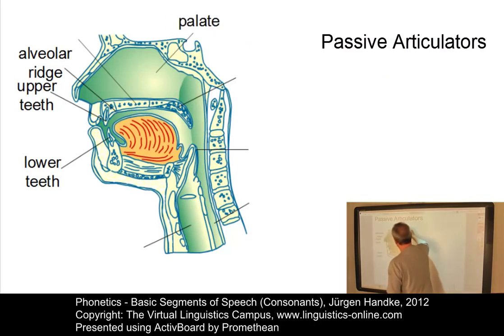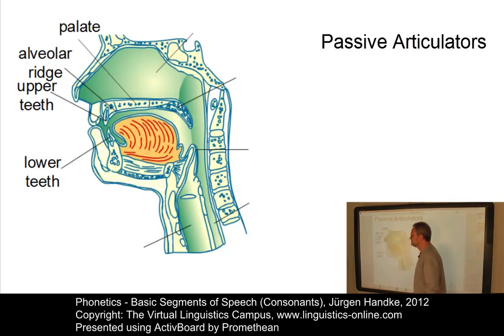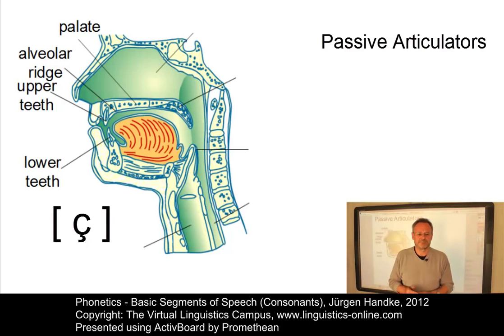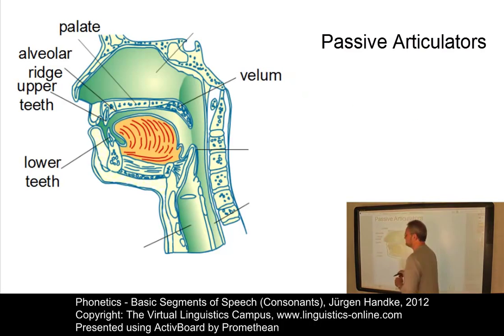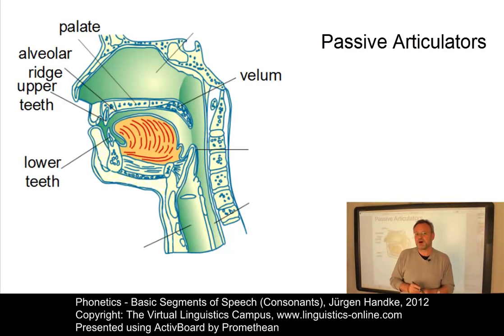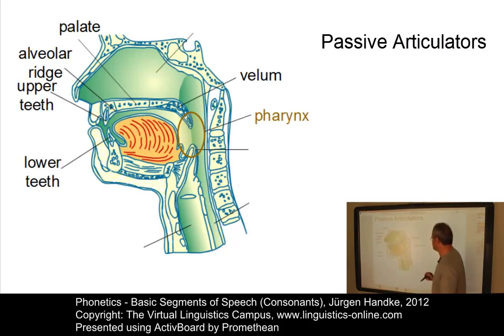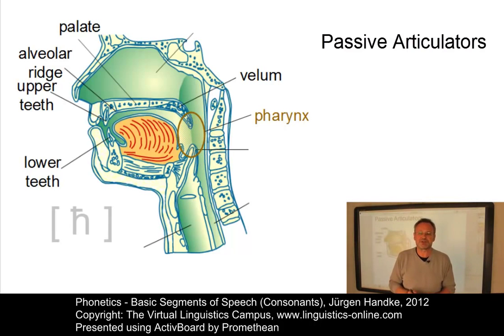The palate, or hard palate, is an area for a large number of consonants and is often referred to as the roof of the mouth. Then we have the soft palate or velum, which is a broad band of muscular tissue in the upper region of the mouth. Typical consonants there are [k] or [g]. The pharynx is also used as a contact area for the production of some consonants.